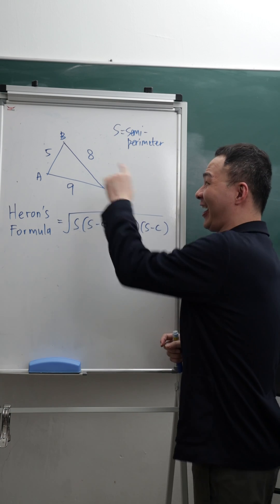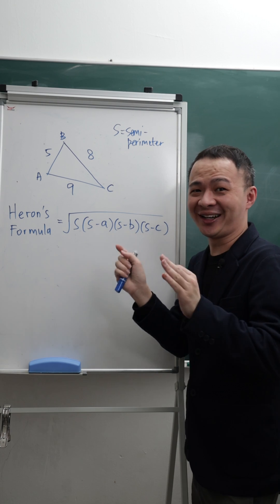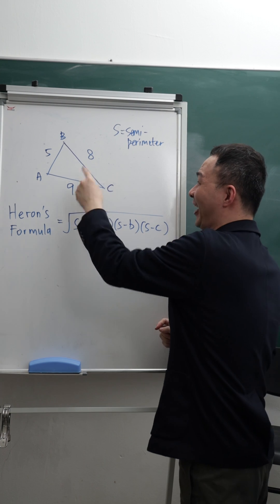All right, today I'm going to teach you a faster way to find the area for a triangle. This triangle is not a normal triangle because three sides have different lengths. So it's quite hard for most students to find the area of it.